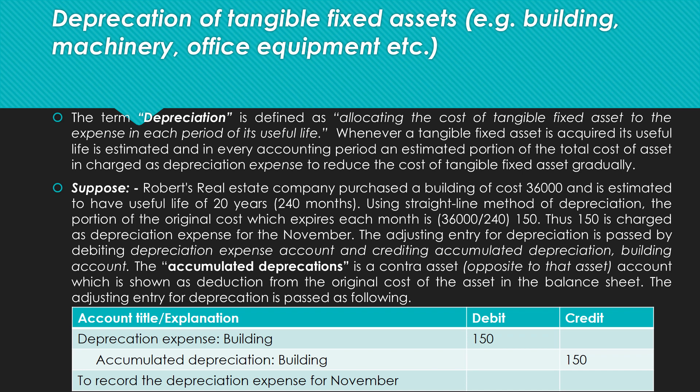The adjusting entry for depreciation is passed by debiting Depreciation Expense and crediting Accumulated Depreciation — Building. Accumulated Depreciation is a contra-asset account, opposite to the building account, and is shown as a deduction from the original cost of the asset in the balance sheet to find the book value. The adjusting entry is: debit Depreciation Expense $150, credit Accumulated Depreciation — Building $150 — to record depreciation expense for the month of November. That's all for the adjusting entry apportioning recorded cost. Depreciation continues to be charged each accounting period until the total cost of the asset is fully expired.